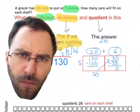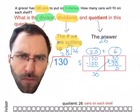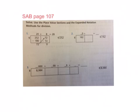Did you show your work in your math notebook? Go ahead and get to page 107 in your SAB. You can see the directions say solve. We're going to use the place value sections and expanded notation methods for division. Expanded notations method is also called partial quotients.